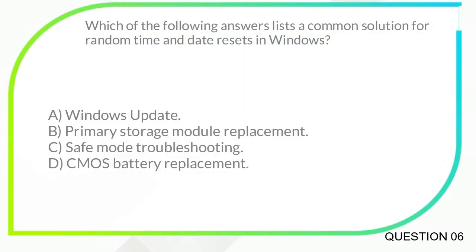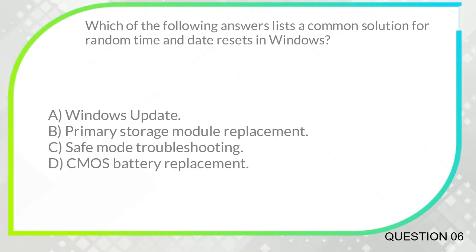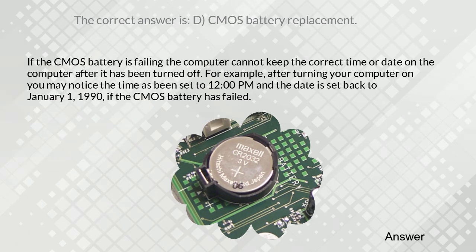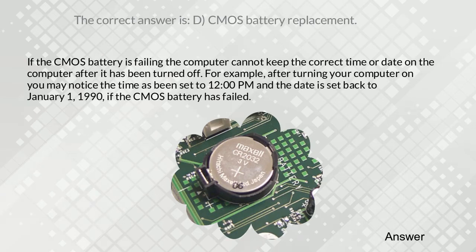Which of the following answers lists a common solution for random time and date resets in Windows? A. Windows update. B. Primary storage module replacement. C. Safe mode troubleshooting. D. CMOS battery replacement. The correct answer is D. CMOS battery replacement. If the CMOS battery is failing, the computer cannot keep the correct time or date after it has been turned off. For example, after turning your computer on you may notice the time has been set to 12 p.m. and the date is set back to January 1, 1990, if the CMOS battery has failed.